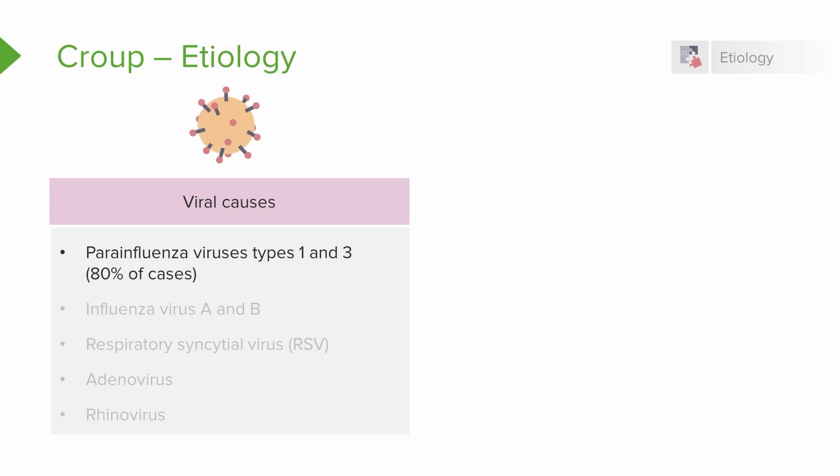The most common cause of croup are viruses. The parainfluenza viruses types 1 and 3 are responsible for about 80% of cases. Influenza A and B can also cause croup, along with the respiratory syncytial virus, or RSV.